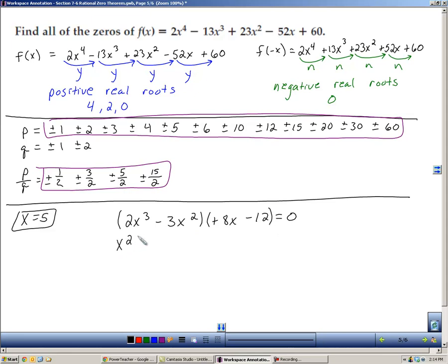Take out an x squared, leaving me with a 2x minus 3. Here I'm going to take out a 4, which leaves a 2x minus 3, which is very promising because then I have 2x minus 3 times x squared plus 4. And that equals 0.